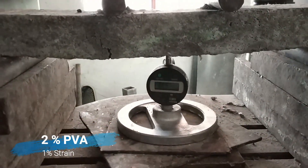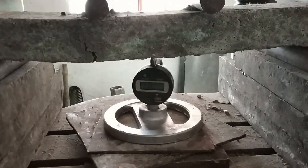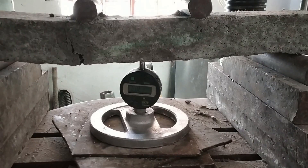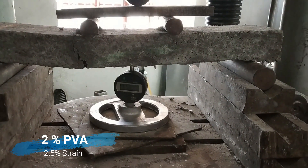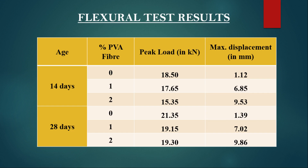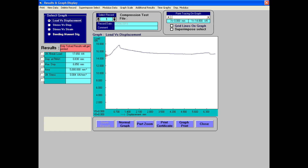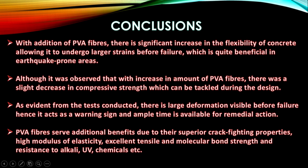Strain is already 1% now. Some cracks have started showing up and the strain is 2.5%. Although the compressive strength decreases slightly with the increase in PVA fiber, the maximum displacement in the flexural test increases. It is quite evident from the graph that the plastic nature of the concrete increases as we increase the amount of PVA fiber added. The experiment was conducted successfully and the following conclusions were made.